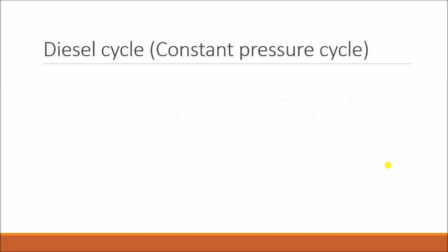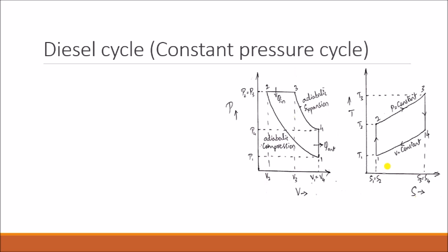Let's go through the first one, that is the diesel cycle. This diesel cycle is also called as constant pressure cycle. This diesel cycle was invented by inventor Rudolf Diesel in the year 1890, hence the name is given as diesel cycle. This cycle is explained by two diagrams: PV and TS diagram.